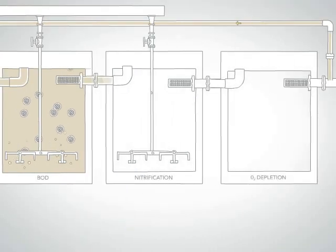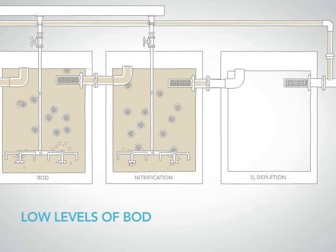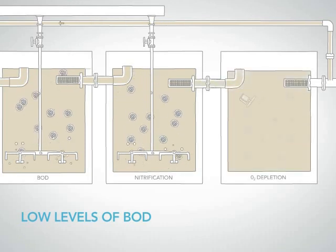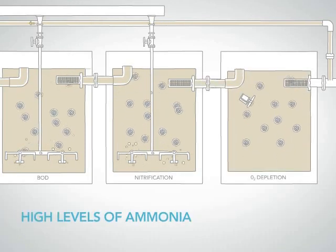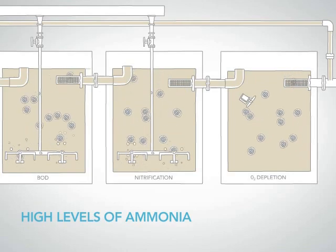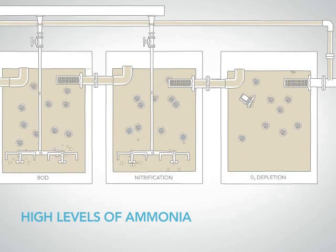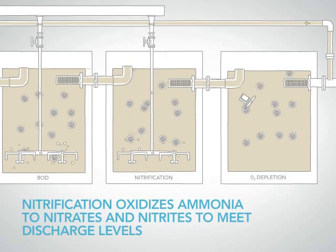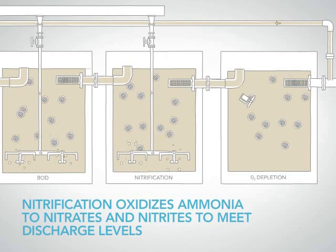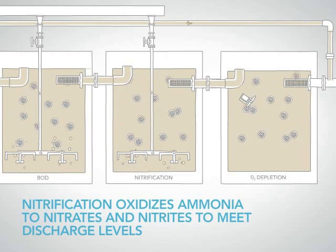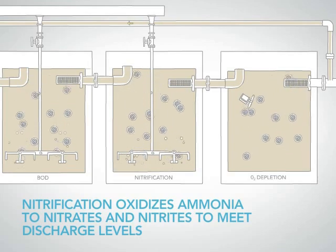In the third reactor, the influent has low levels of BOD, limiting the growth of heterotrophic bacteria, and contains high levels of ammonia, supporting the growth of autotrophic bacteria on the biofilm required for nitrification. In addition, the nitrification process oxidizes ammonia to nitrates and nitrites in order to meet the required discharge levels.